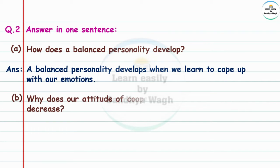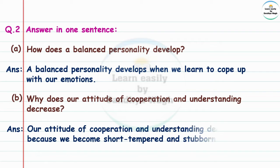Next: Why does our attitude of cooperation and understanding decrease? Cooperation means sahakarya. Answer: Because we become short-tempered and stubborn. Short-tempered means easily angered and stubborn means hard or inflexible.